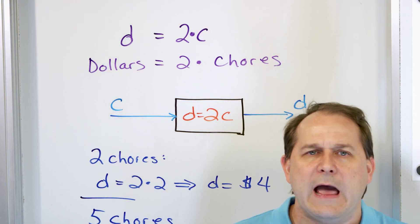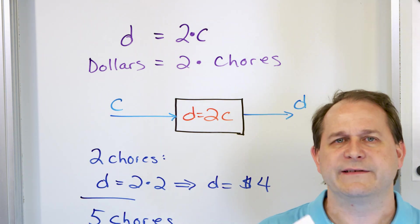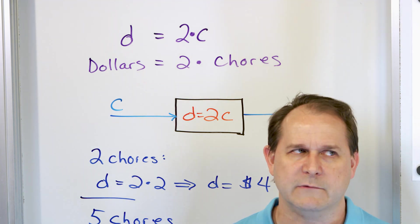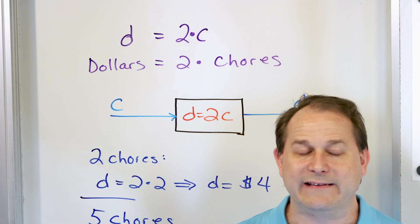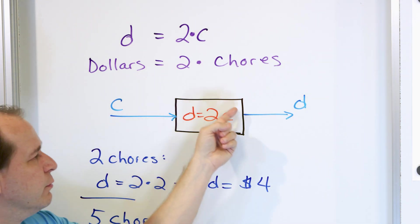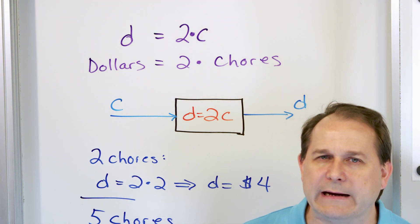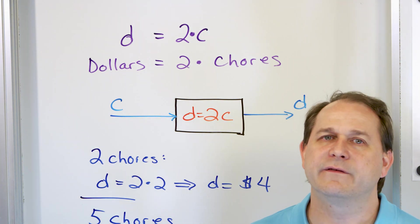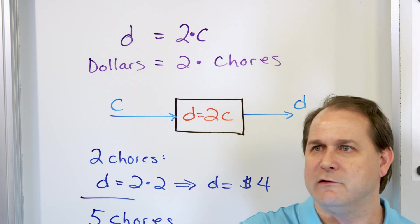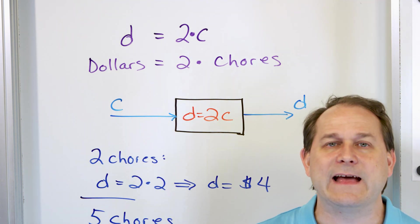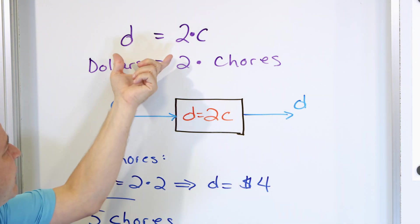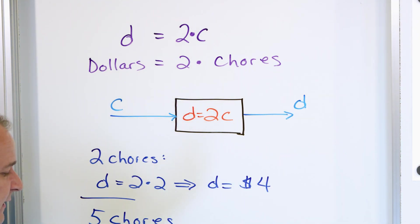If you ever hear someone say a function in math is doing something, just think: it's just a calculation. Numbers go in, numbers go out. That's literally it. When we get to higher math, the functions inside the box can get more complex, but the idea is the most important thing — numbers go in, calculate, numbers come out. That is what a function is. Function and equation in this case are basically the same thing.